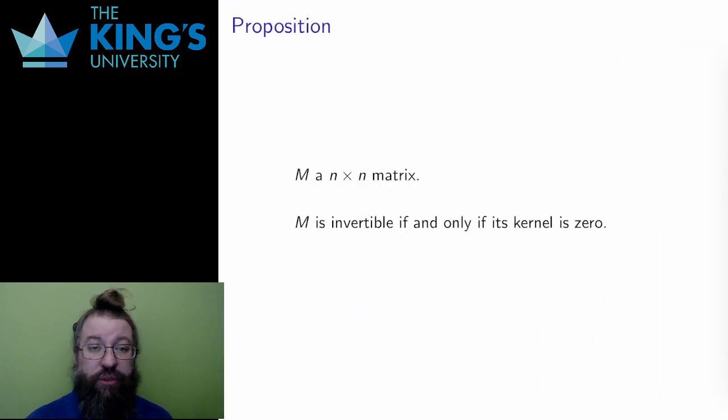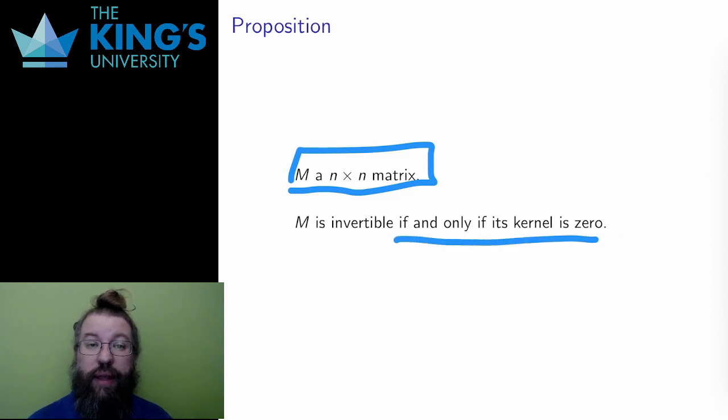Here is another proposition. Now let M be a square n by n matrix, so a transformation of R^n to itself. As a square matrix, it might be invertible. Recall that only square matrices can be invertible. This is the claim. The matrix is invertible if and only if its kernel is zero. That is, only the zero vector goes to the zero vector. Nothing else is sent to zero.